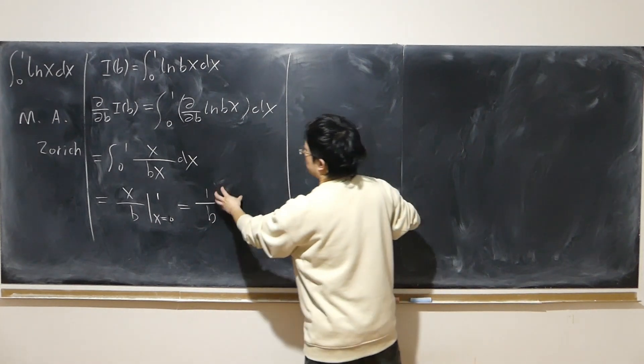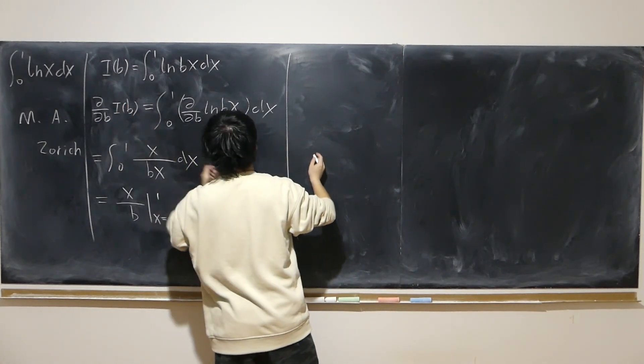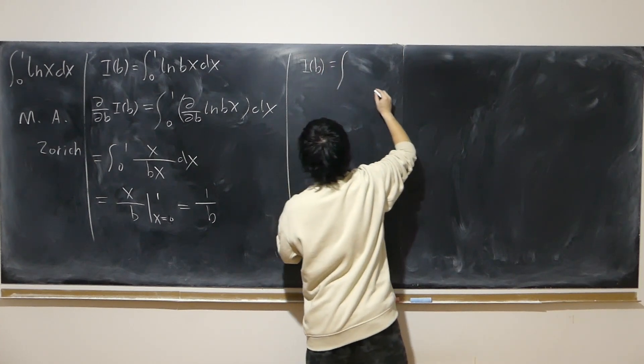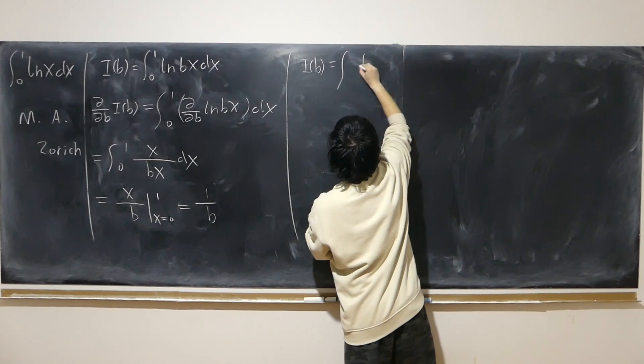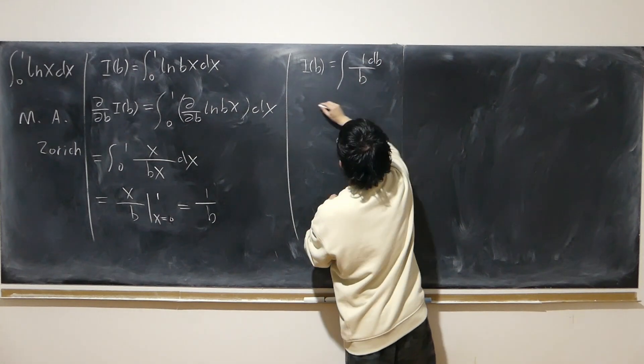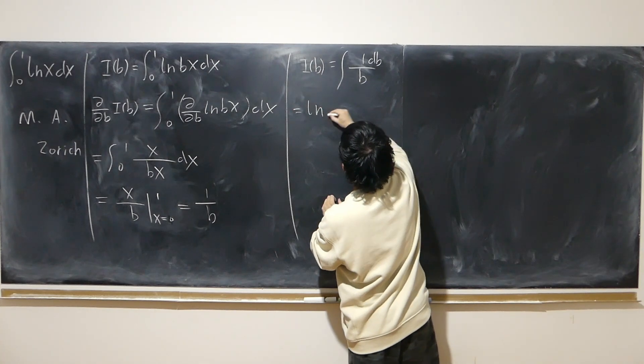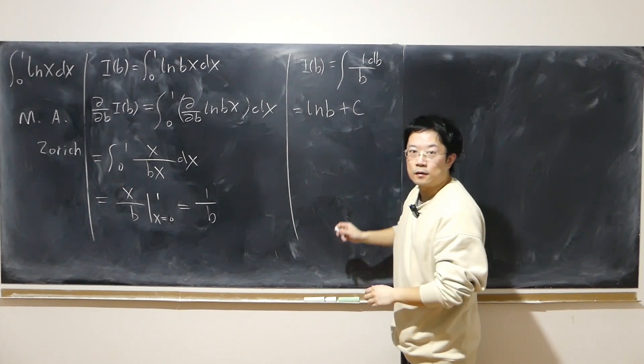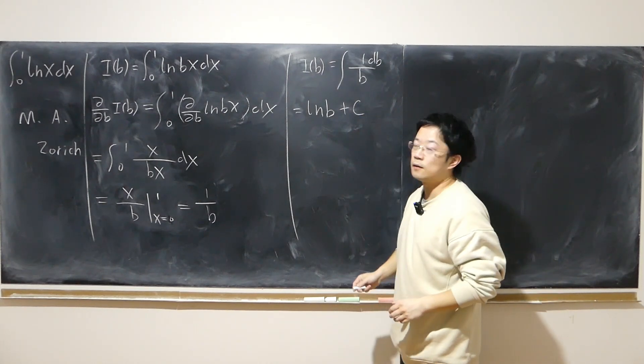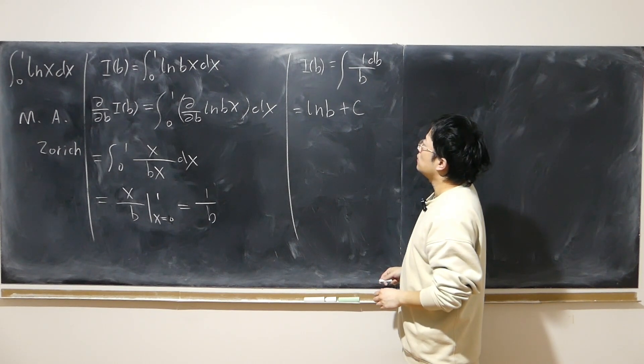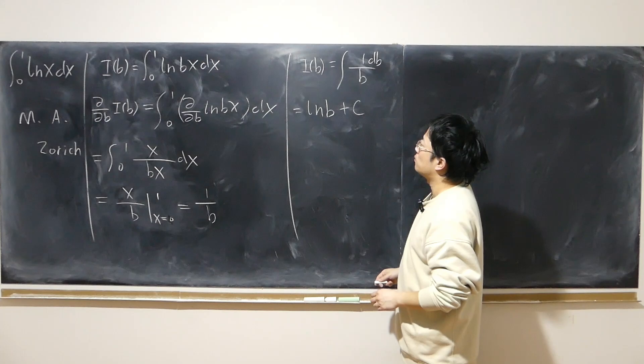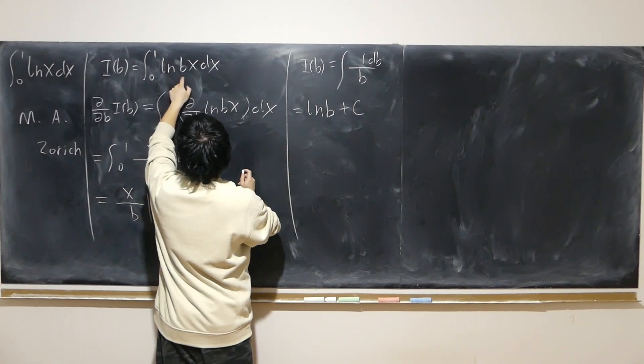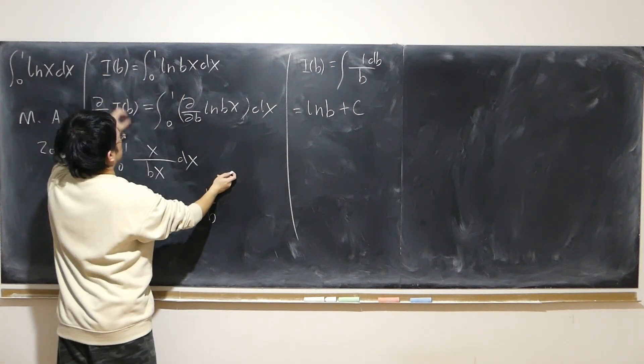Which means I(b) must be the antiderivative of this. Which means that is just log of b plus c. Because it's an indefinite integral at the end of the day. But before we proceed and plug b into 0, b equal to 1. Because I'd like to know b equal to 1 gives me log x, my goal integral. I(1), that's my goal.